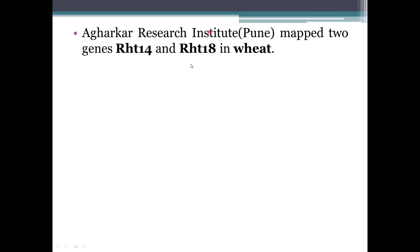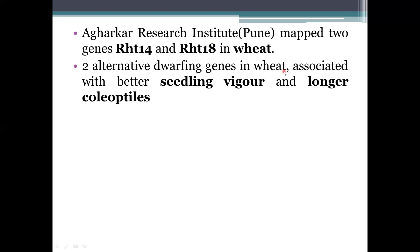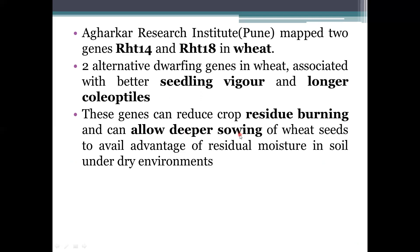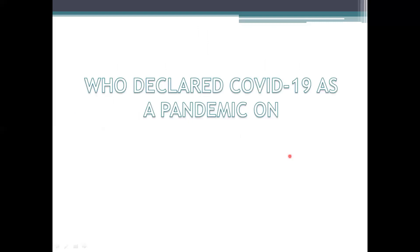Another recent development is that the Agarkar Research Institute in Pune has mapped two genes — RHT14 and RHT15 — in wheat. These genes are associated with better seedling vigor and longer coleoptiles. Using these genes can help reduce residue burning and allows deeper sowing of seeds. Deeper sowing helps take advantage of residual moisture in the soil under drier conditions.